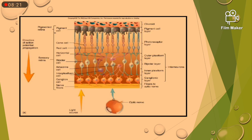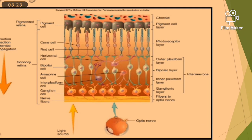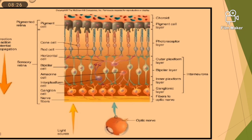Here you can see a very important diagram, more often asked in physiology. You can see pigment cell, cone cell, rod cell, horizontal cell, bipolar cell, amacrine cells, interplexiform cells, ganglionic cells, and nerve fiber. These are the 10 layers, also asked in physiology exams as layers of the retina.